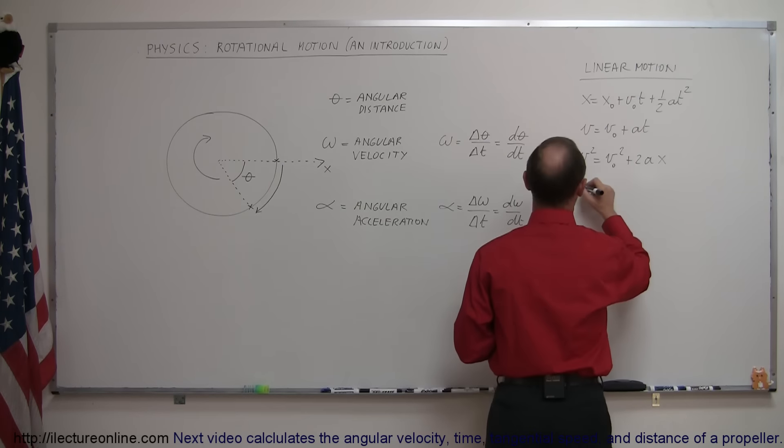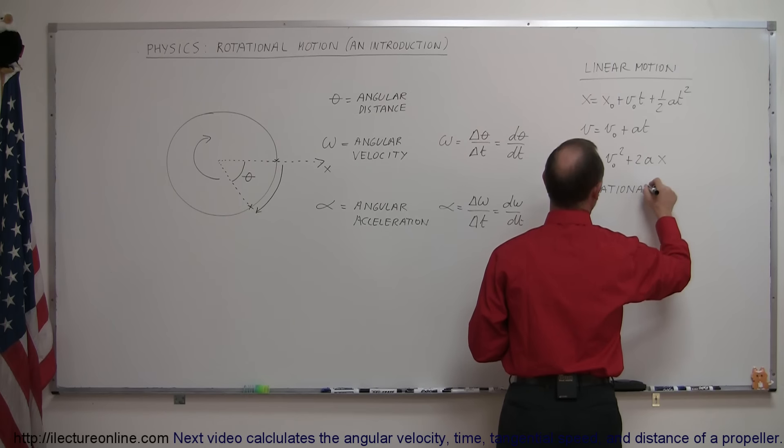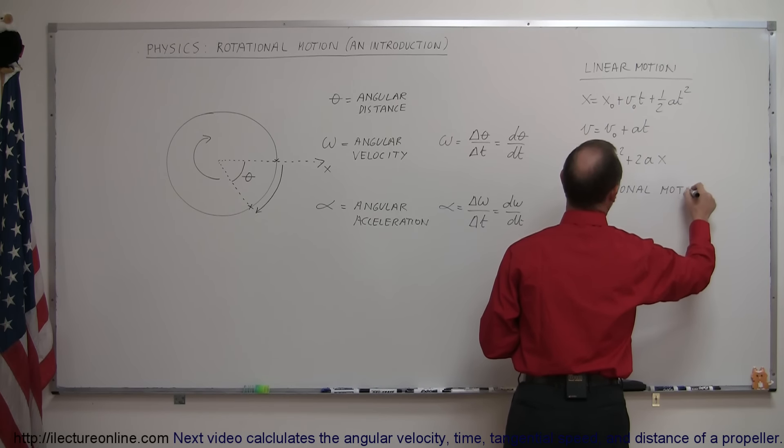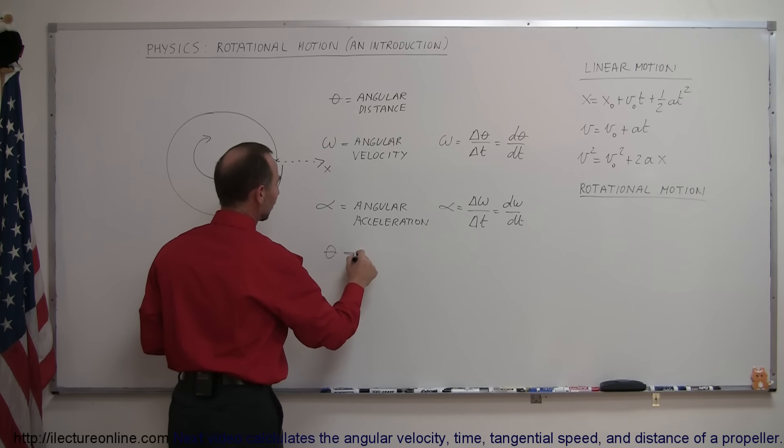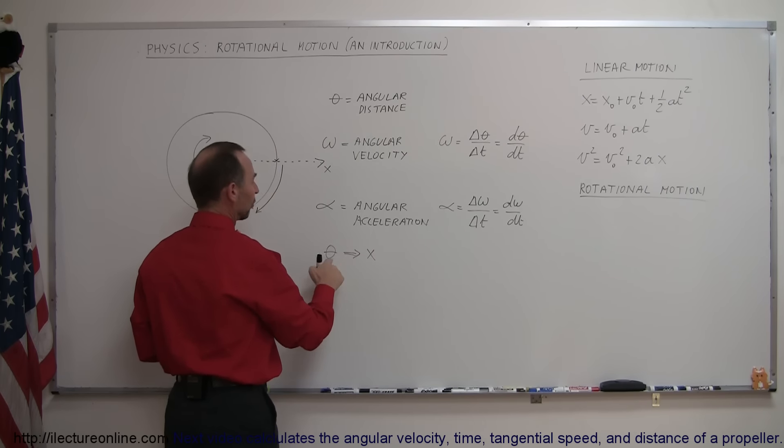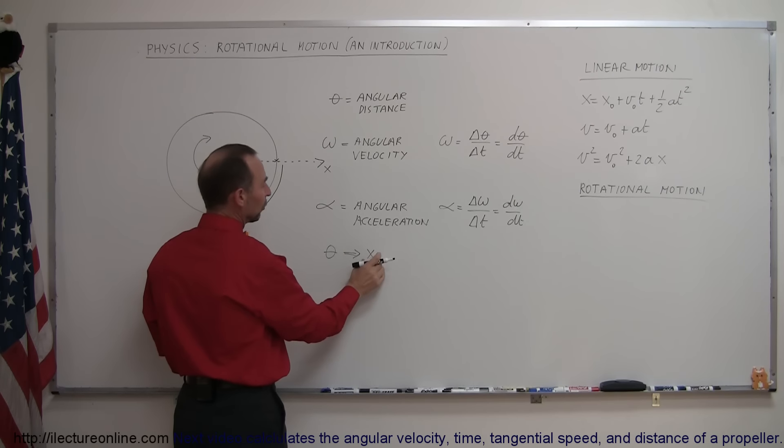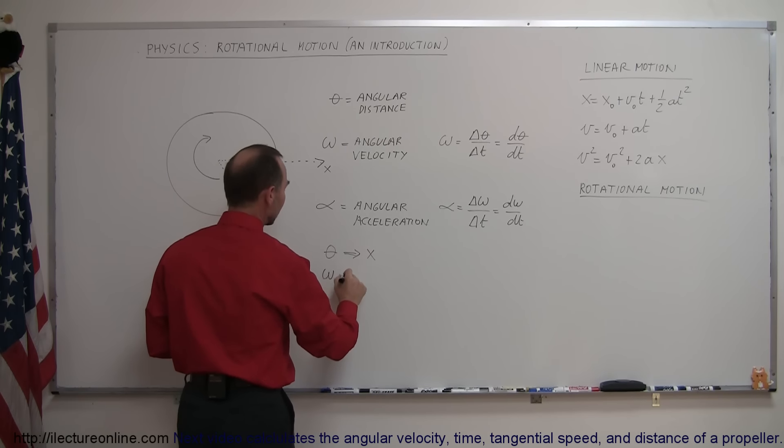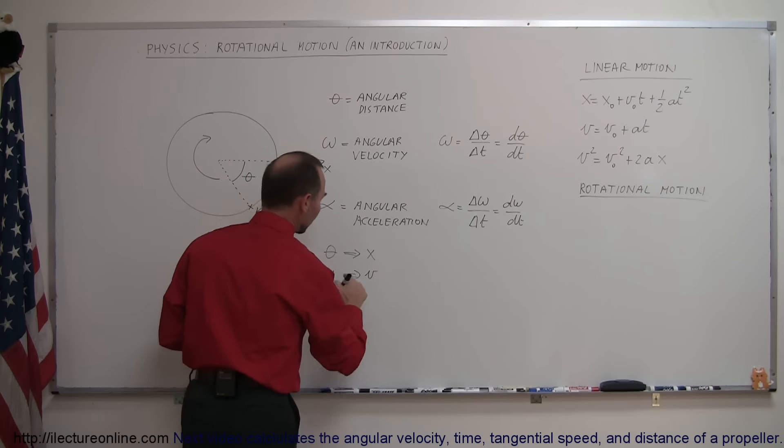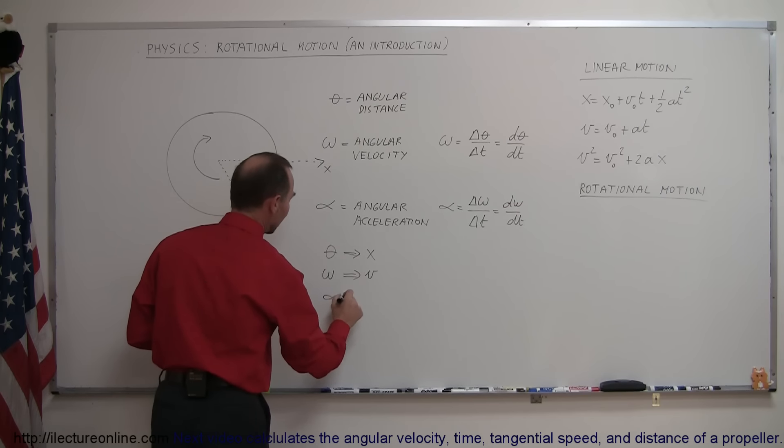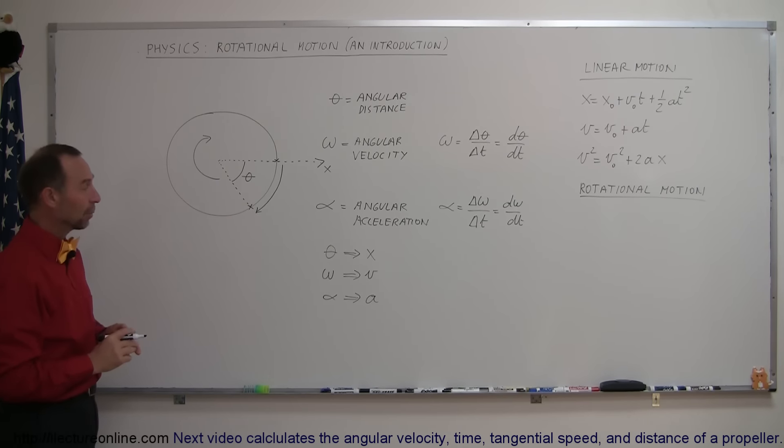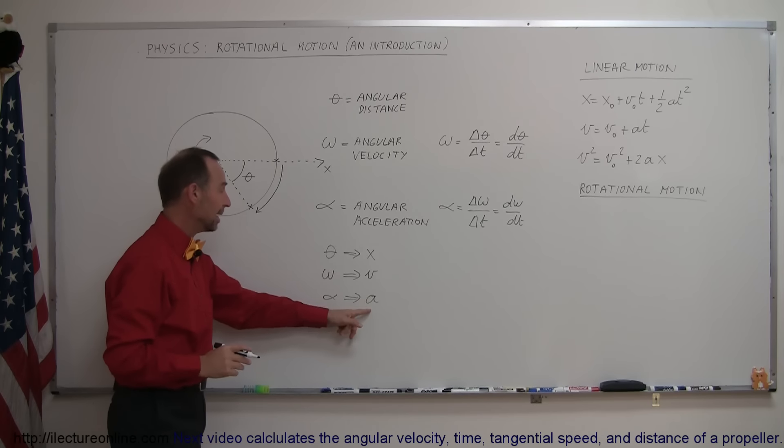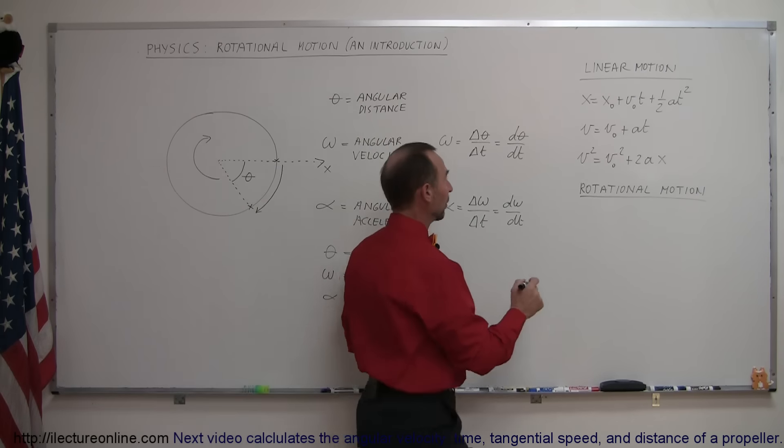And we can write the equivalent equations for rotational motion, and where the equivalence comes from is that theta is the replacement for the variable x, so rotational distance is the parallel to the linear distance. Omega is the parallel to the linear velocity, and alpha is the parallel to the linear acceleration. So if we take the three equations of kinematics and replace the variables x, v, and a by theta, omega, and alpha, we get the three new equations.